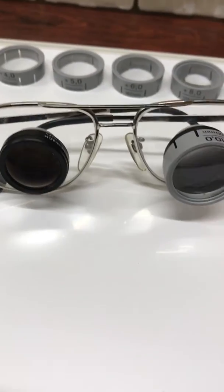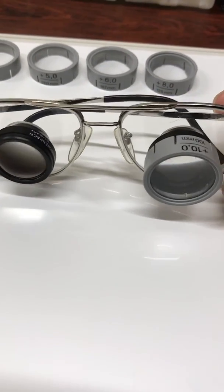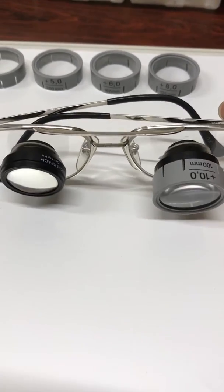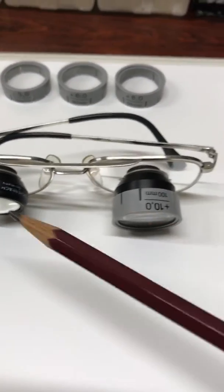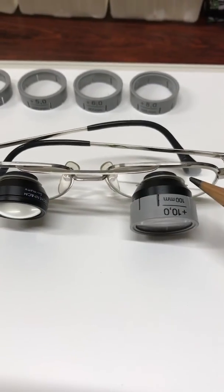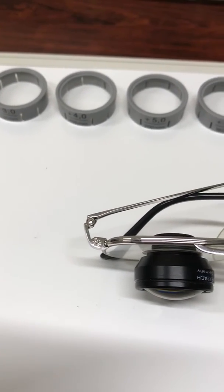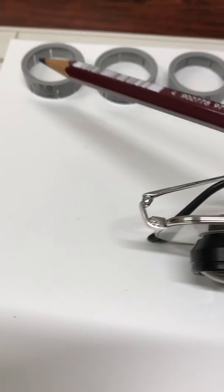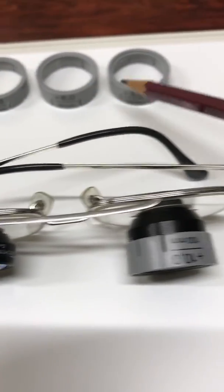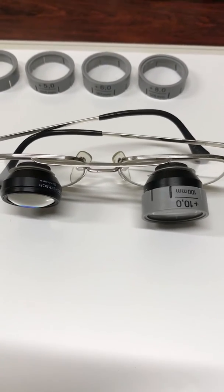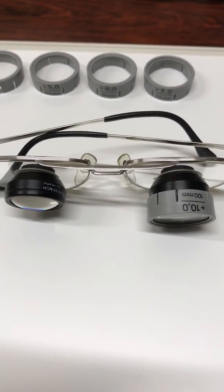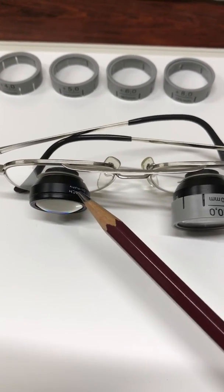This is a Galilean system made by Eschenbach in Germany. It consists of two Galilean telescopes and attachments. The attachments are composed of three, four, five, six, eight, ten, twelve, and sixteen diopters. I made the glass as monovision. The right eye is to see distance objects and the left eye is to see near objects.